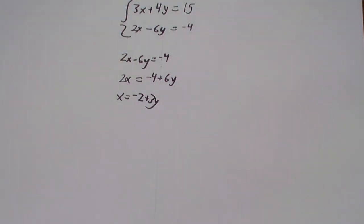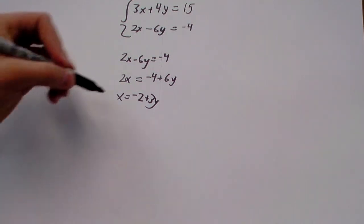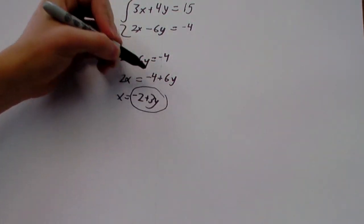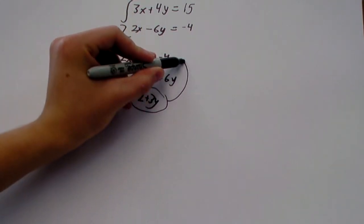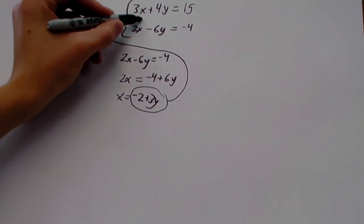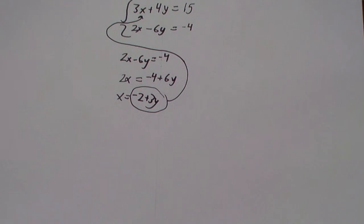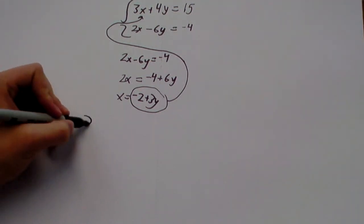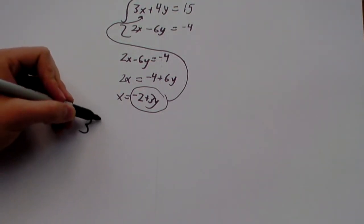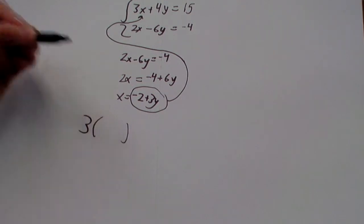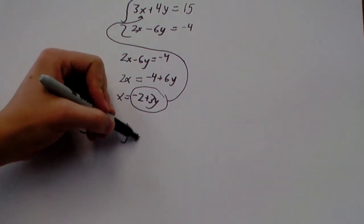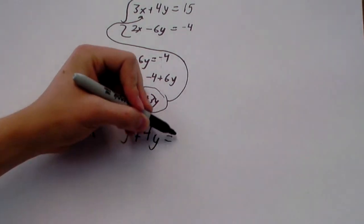Alright, there we go. So, now we can solve this by substitution just by taking this value right here and substituting it for x into this equation right here. So, that'll give us 3 times x. I'll put a parenthesis here to represent whatever x is. Plus 4 times y equals 15.